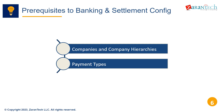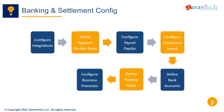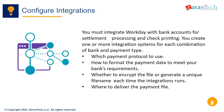The key steps in banking and settlement configuration are: configuring integrations with banks for settlement and printing, defining rules for payment elections by workers or administrators, configuring payroll payslips, setting up check print layouts, defining bank accounts and routing rules, configuring business processes for printing, settlement, and payment release, and running prenotes to validate direct deposit accounts.